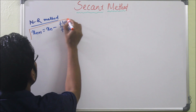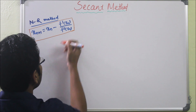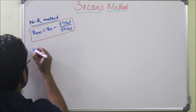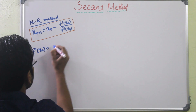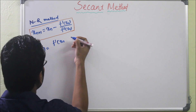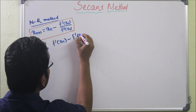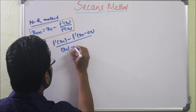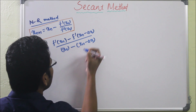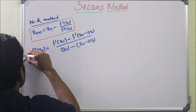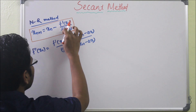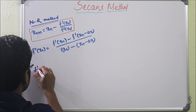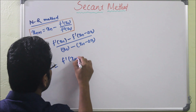What we have to do is change the second order derivative, f''(X(n)), when using the secant method. We can write f''(X(n)) as: f'(X(n)) minus f'(X(n) minus delta X), all divided by X(n) minus X(n-1). We then replace this expression in place of f''(X(n)).